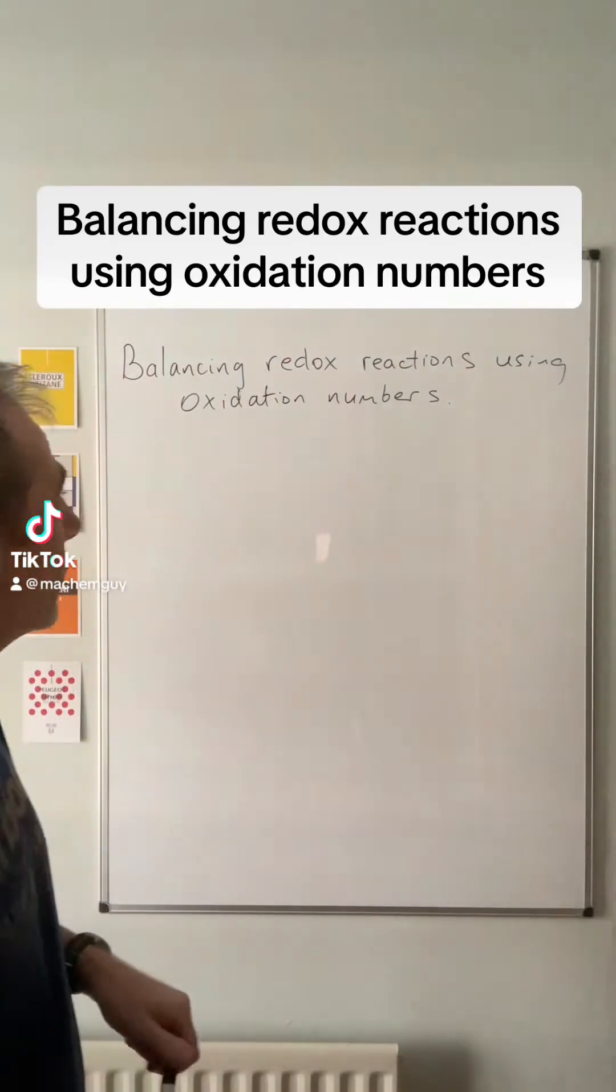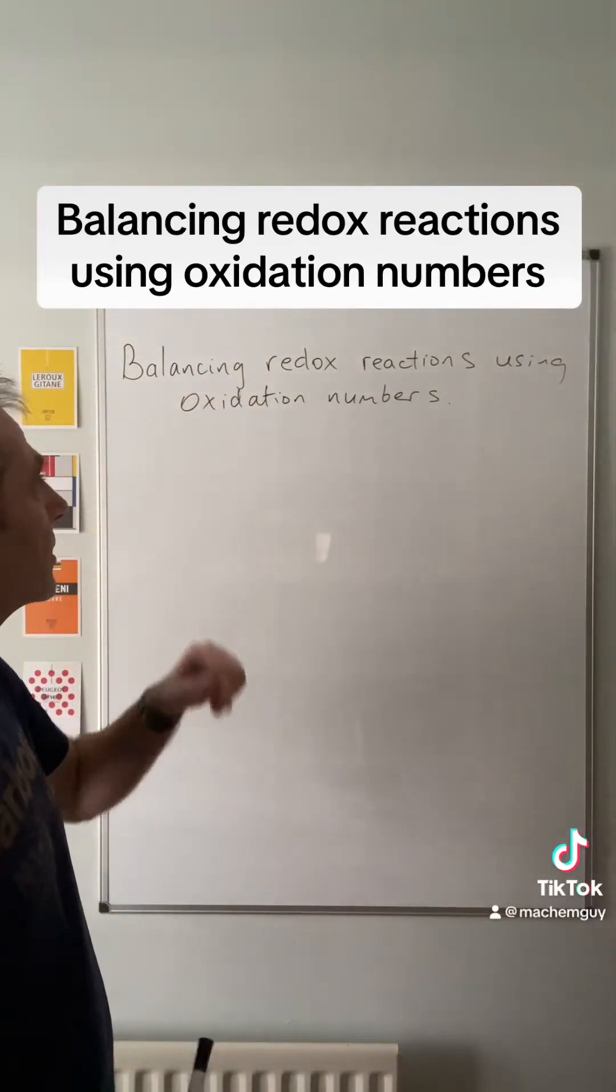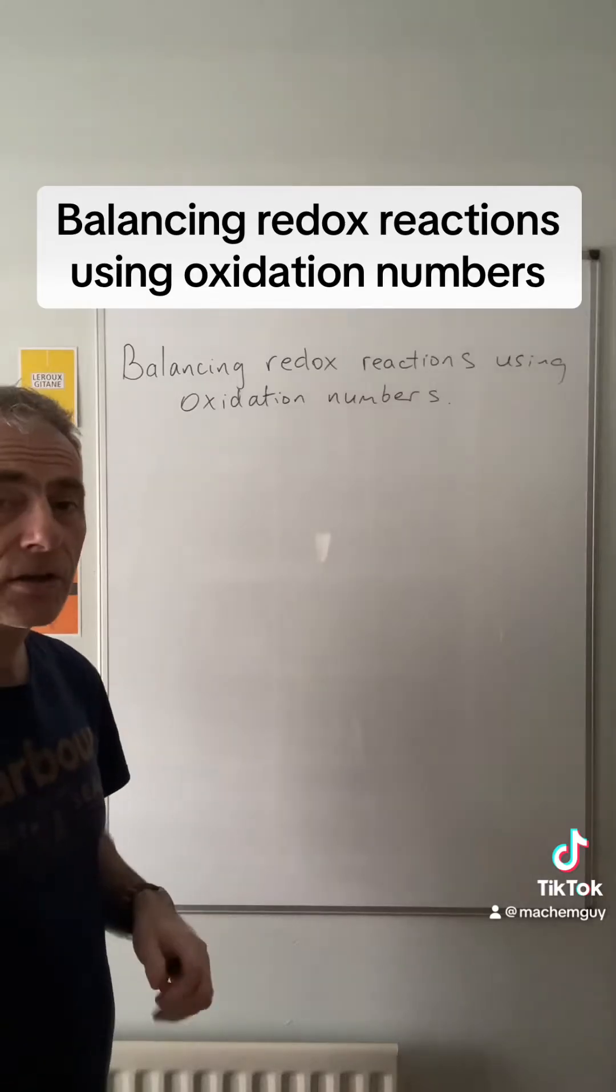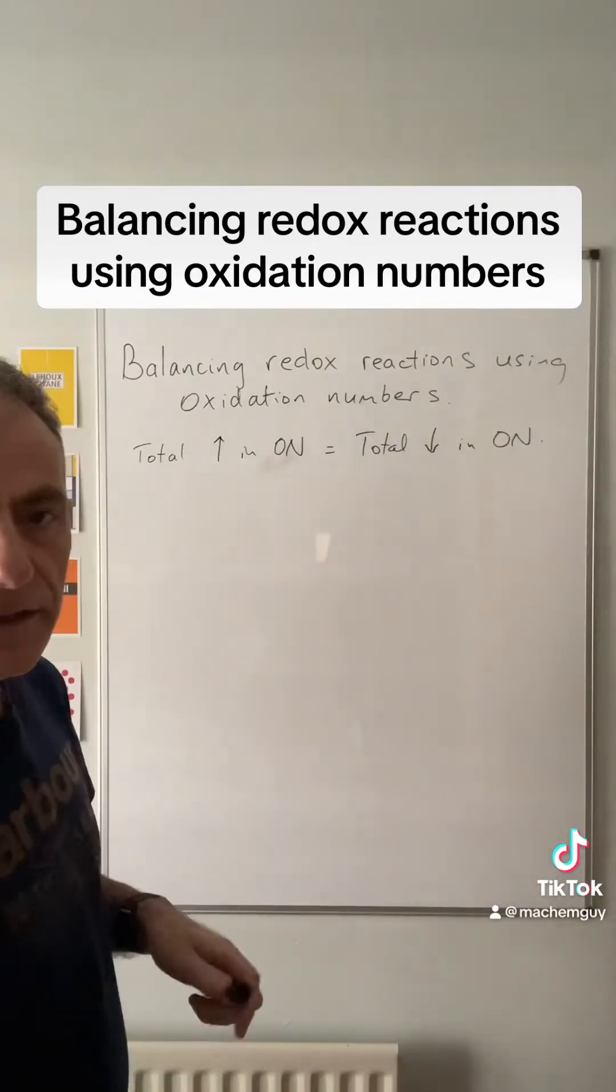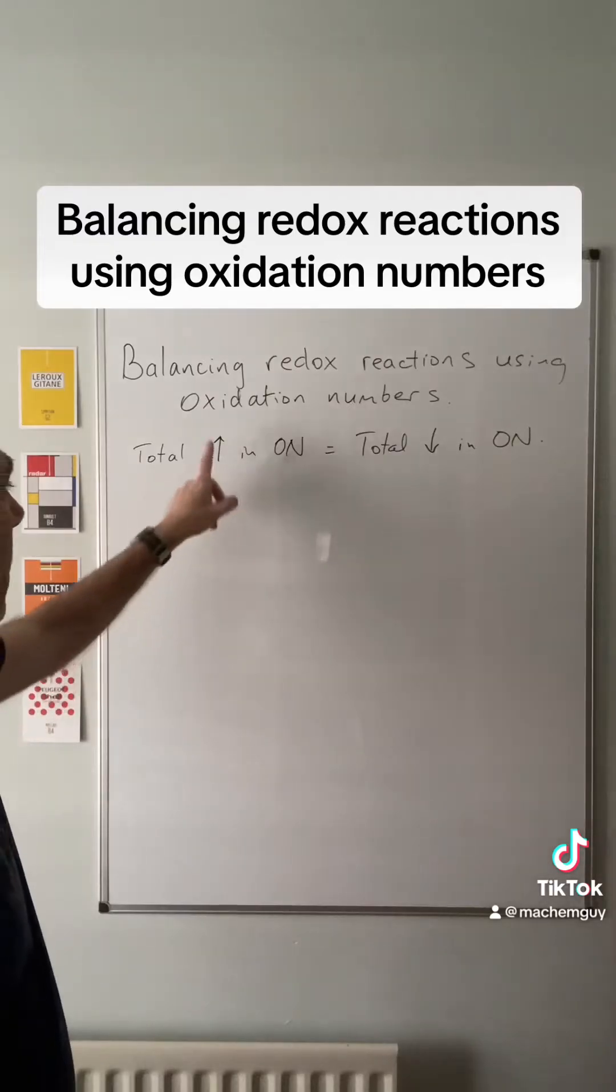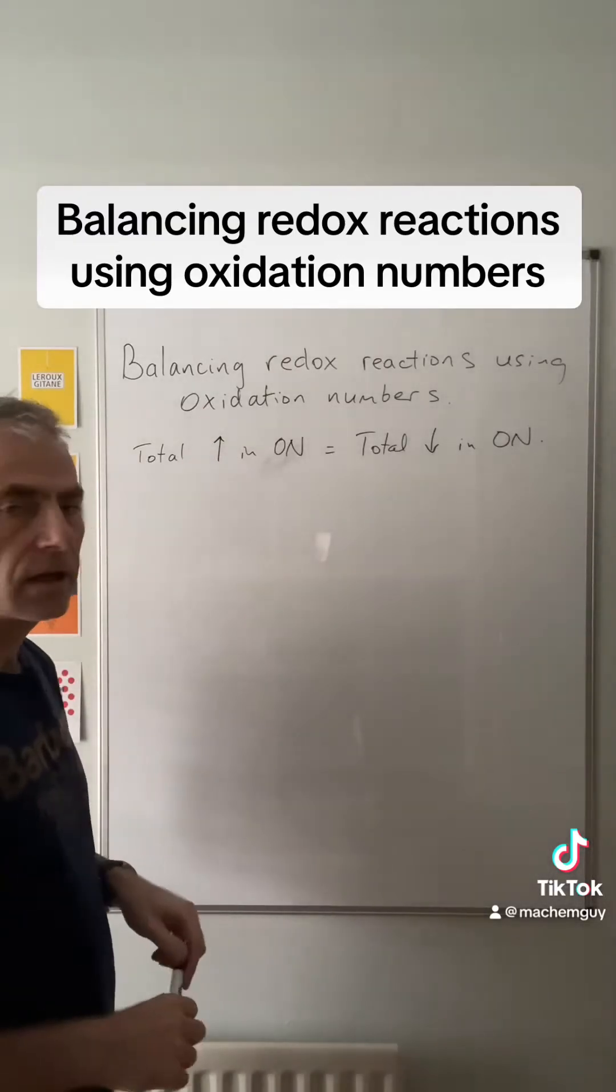I've got another redox related video for you. This one's going to look at balancing redox reactions using oxidation numbers. At the heart of these is this rule here: the total increase in oxidation number has to equal the total decrease in oxidation number.